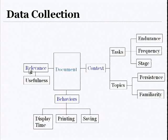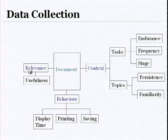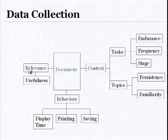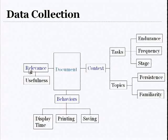For each task and topic, I collected information to characterize them. Endurance and persistence — how long a person expects to be interested in doing a task or be interested in a topic — whether it's a long-term interest or a one-off thing. Frequency for tasks — how often a person actually engaged in a particular task, every day, once a week, once a month? And stage — were you almost finished with the task or just starting? I wanted to look at how all of that stuff affected the ability to go from behavior signals to relevance judgments.